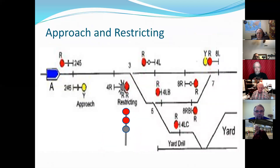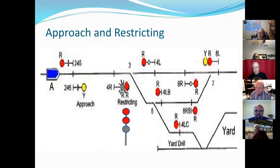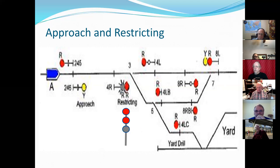Approach and restricting — somebody tell me what this means. You would be able to look at the restricted speed — like 15 miles per hour — right? If it's solid red that's normal, but if it's restricted like that, it might be a posted speed. The restricted speed is defined in your book as restricted speed. You're going to come into the yard, so you have to use your yard speed with it.